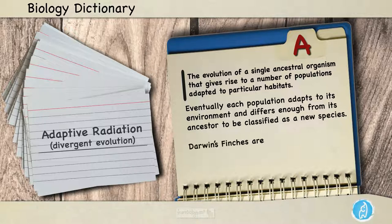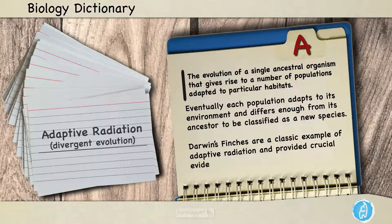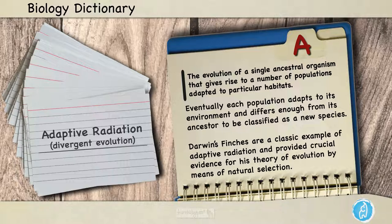Darwin's finches are a classic example of adaptive radiation and provided crucial evidence for his theory of evolution by means of natural selection.